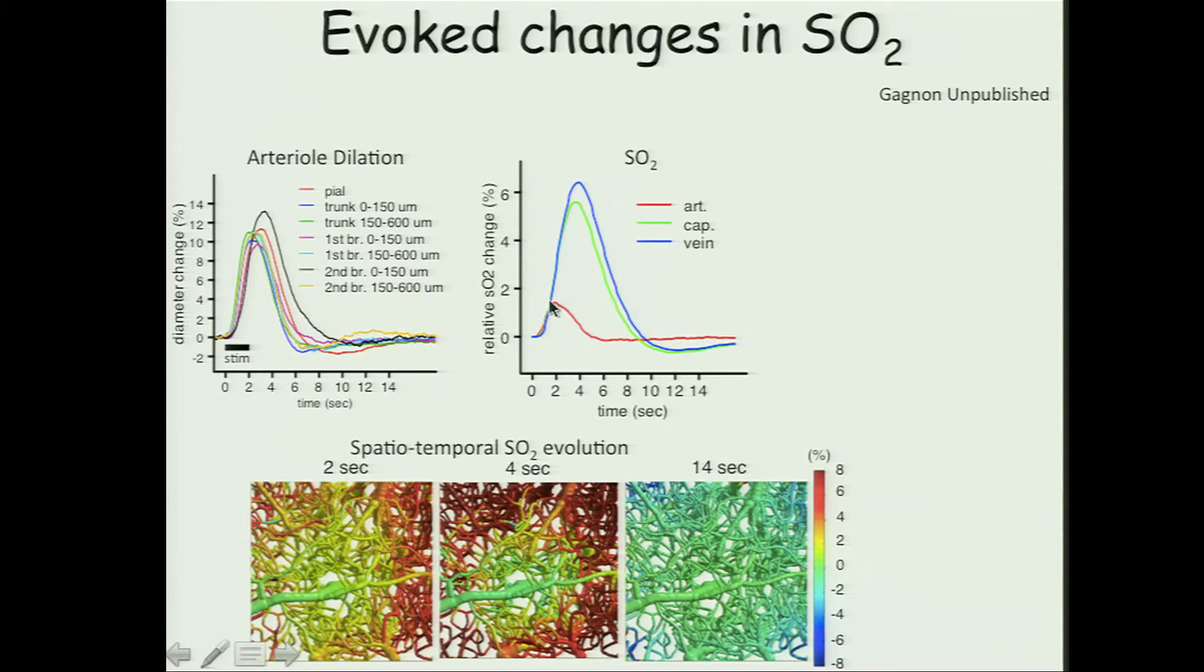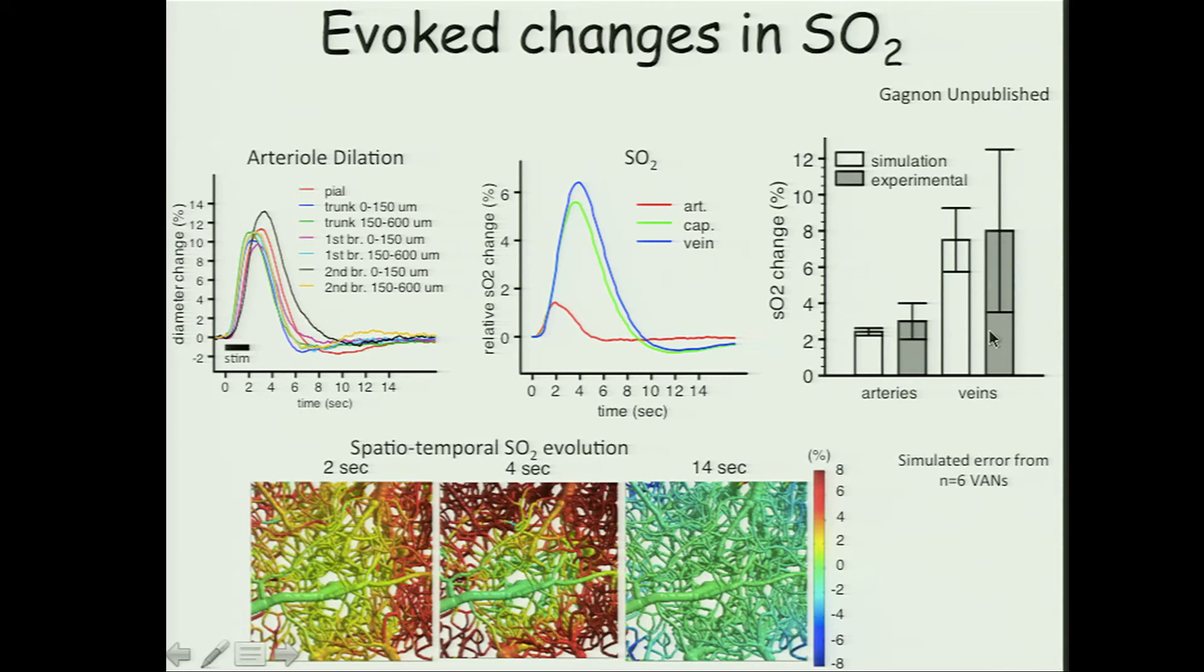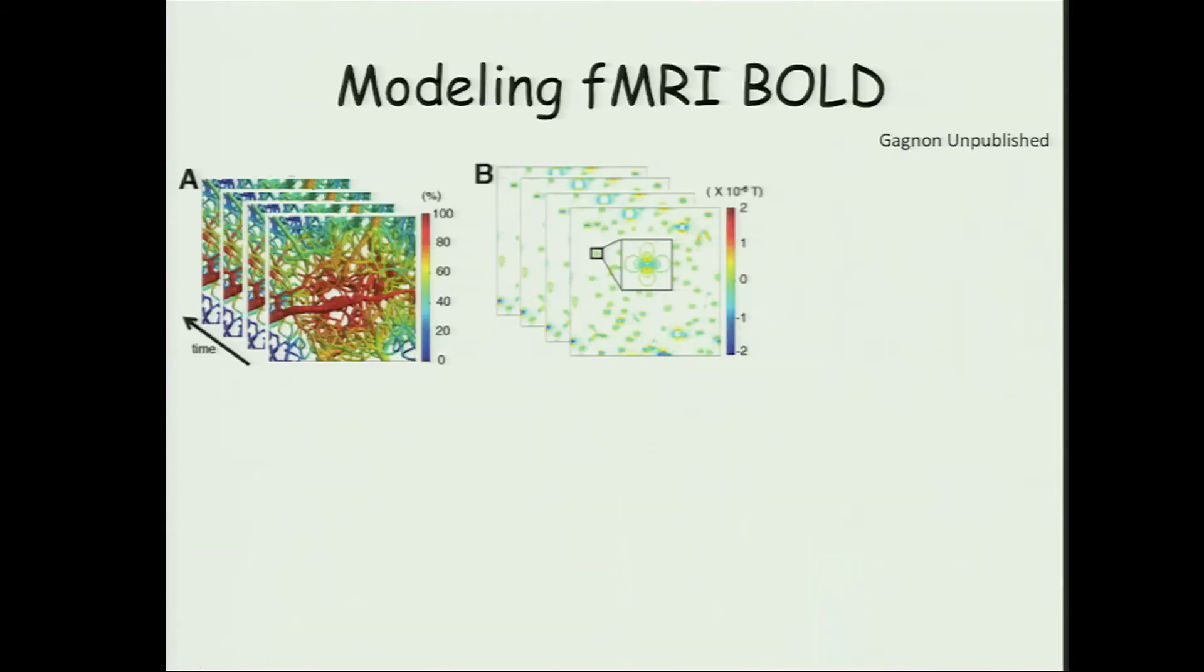So that gives us oxygenation changes happening in the arteries and the veins. We have, over the years, made measurements of this by independent methods, and we see very good agreement between the simulations and the experiments.